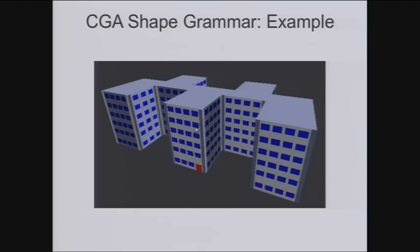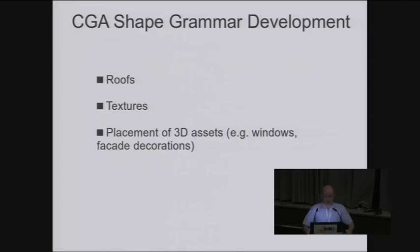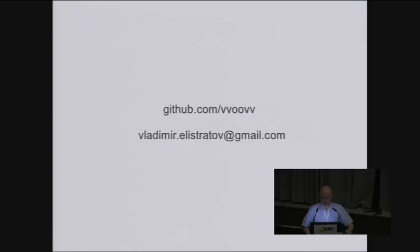So basically that's what I have done so far. And the idea is to write some code that generates 3D models instead of tedious 3D modeling. So then future work is quite obvious. It's to support roofs, support textures, support placement of 3D assets like windows or facade decorations. So all the code will be available at my GitHub account. And that's basically all. Thank you for your attention.